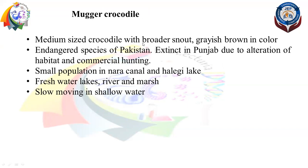Chakor is a critically endangered species of Pakistan because it has become extinct in Punjab due to alteration of habitat, fragmentation, and commercial-level hunting. A small population remains in Nara Canal and Haleji Lake, which is the Nara Desert Wildlife Sanctuary. So we have some members remaining in this area; otherwise, it is a critically endangered species.